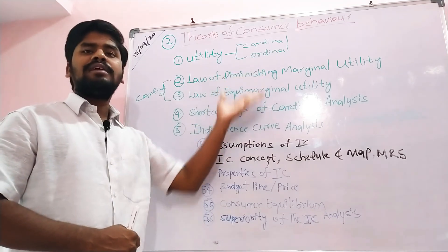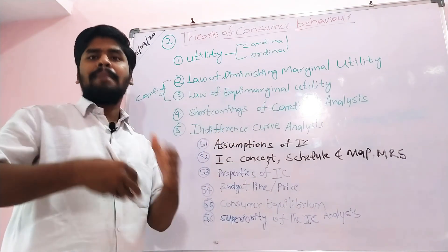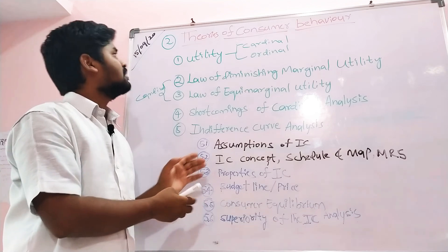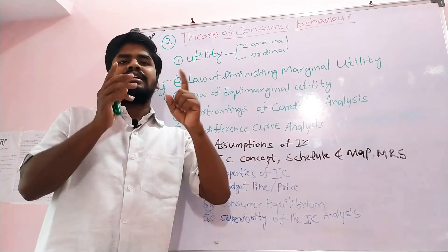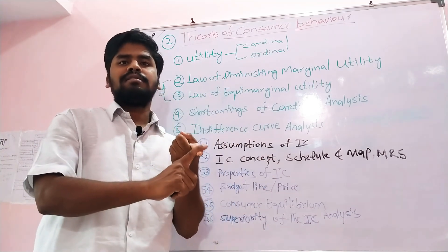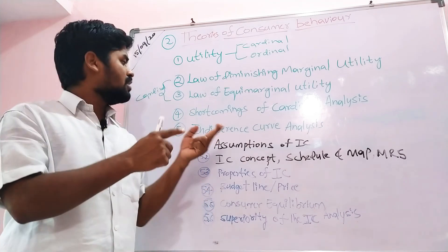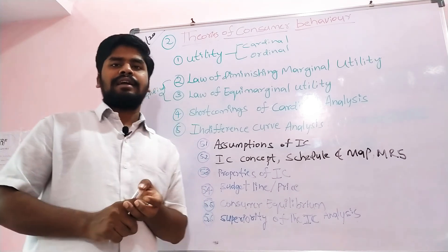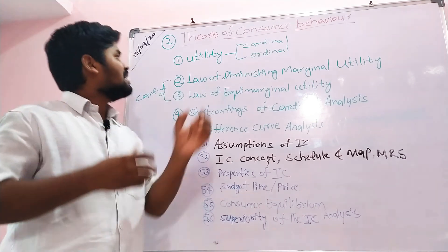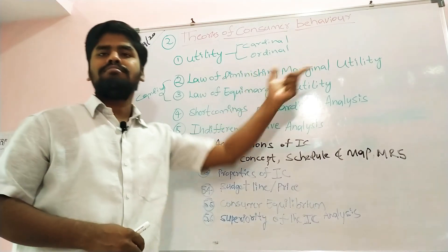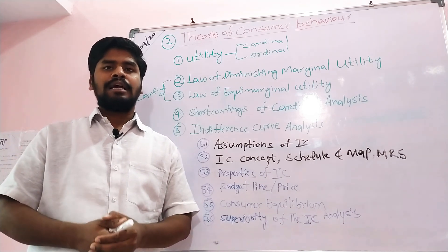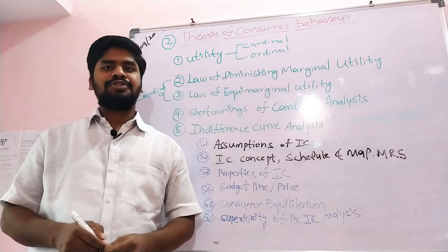In cardinal utility we cannot compare goods the way ordinal analysis allows. So in this chapter, Theories of Consumer Behavior, we will study three main theories: Law of Diminishing Marginal Utility, Law of Equi-Marginal Utility, and Indifference Curve Analysis. In the next video, we will learn about utility and the Law of Diminishing Marginal Utility. Please like and share. Thank you.